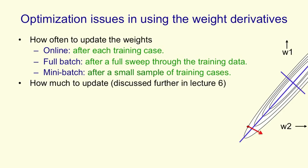Then there's the issue of how much we update the weights, how big a change we make. So we could just, by hand, try and pick some fixed learning rate and then learn the weights by changing each weight by the derivative that we've computed times that learning rate.